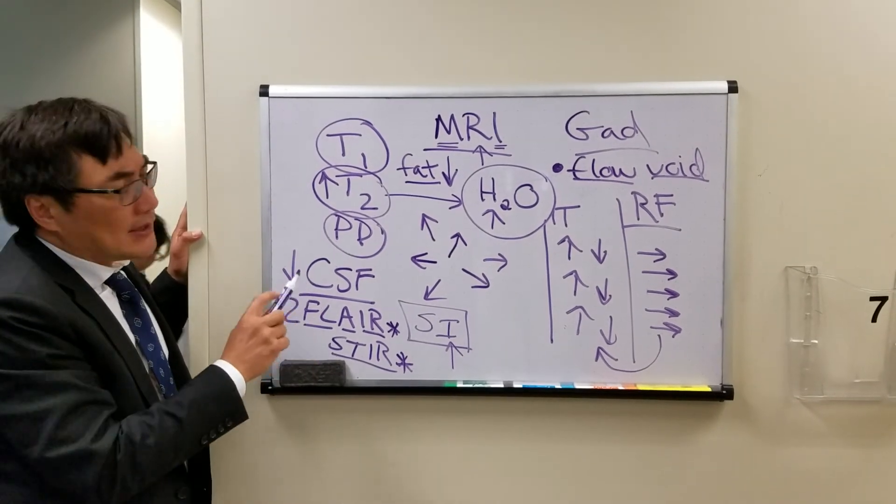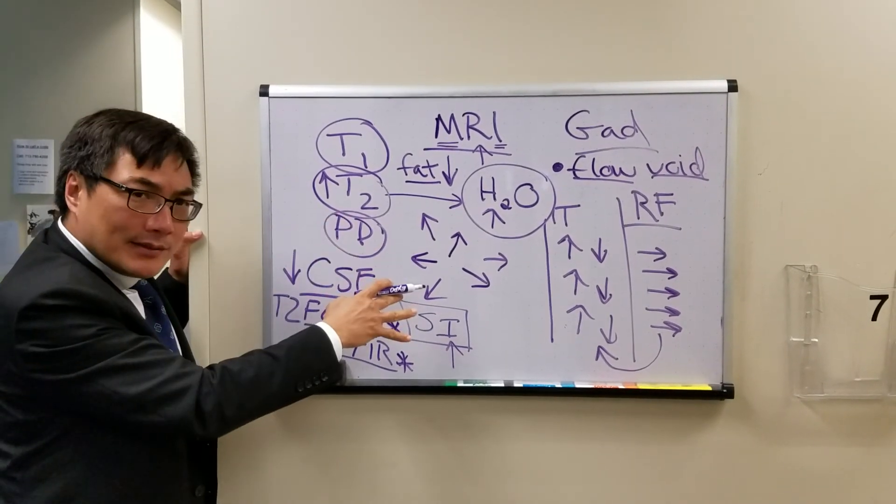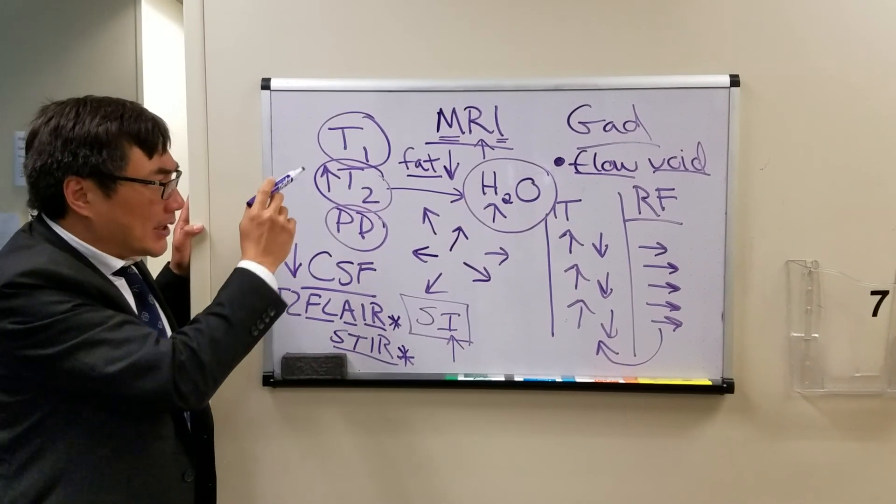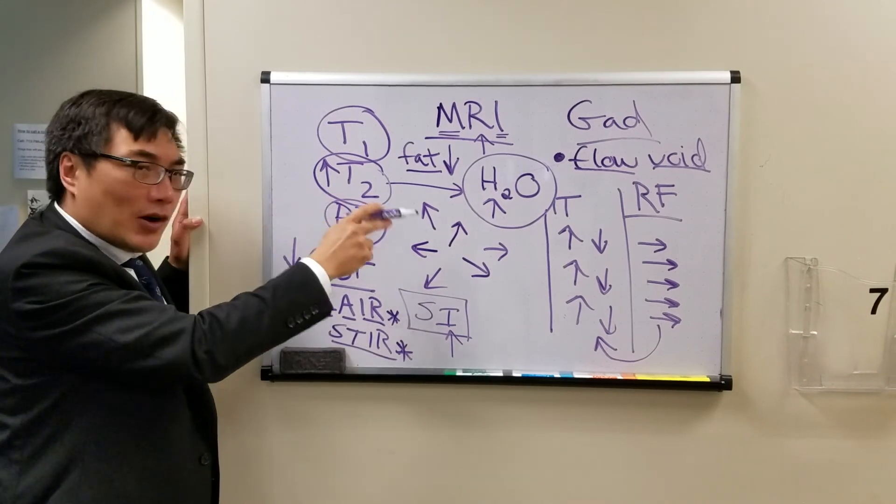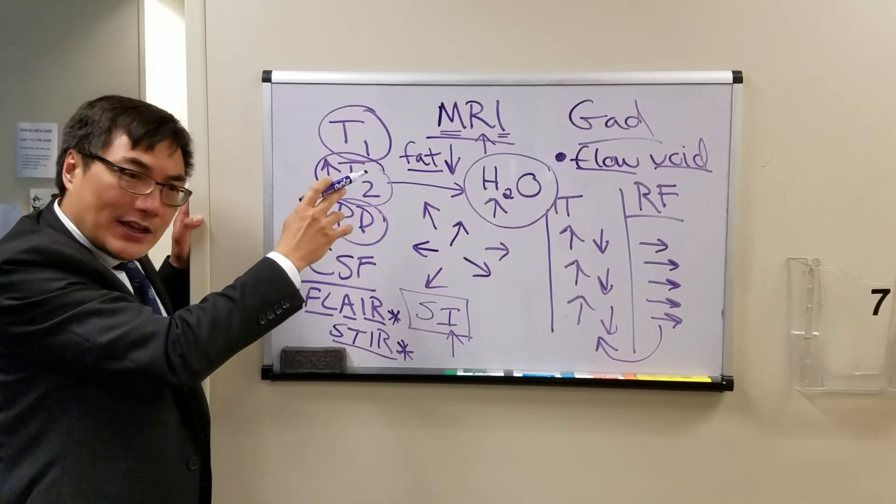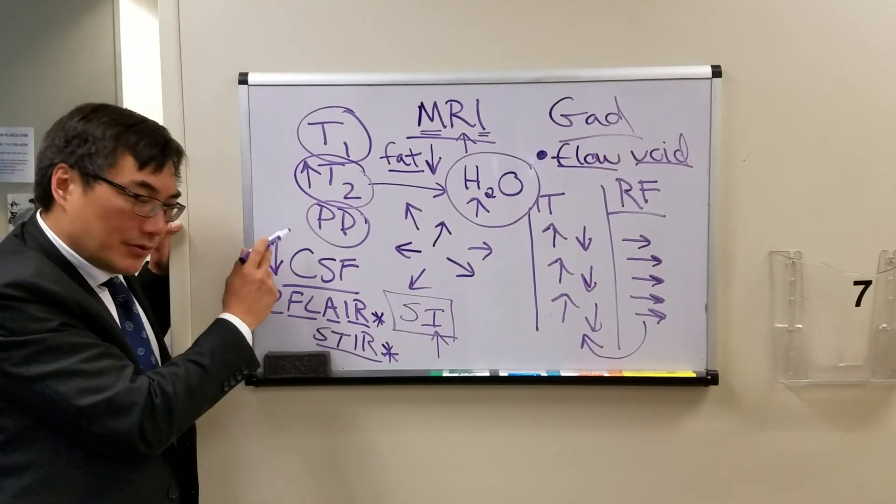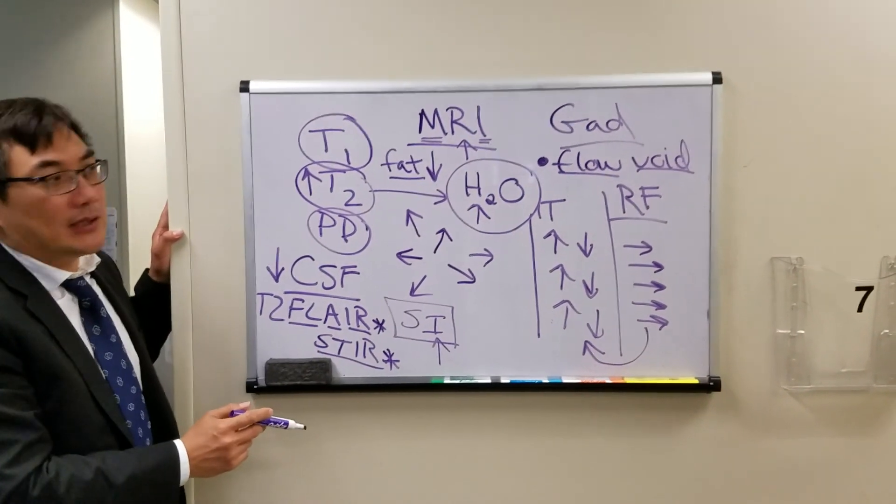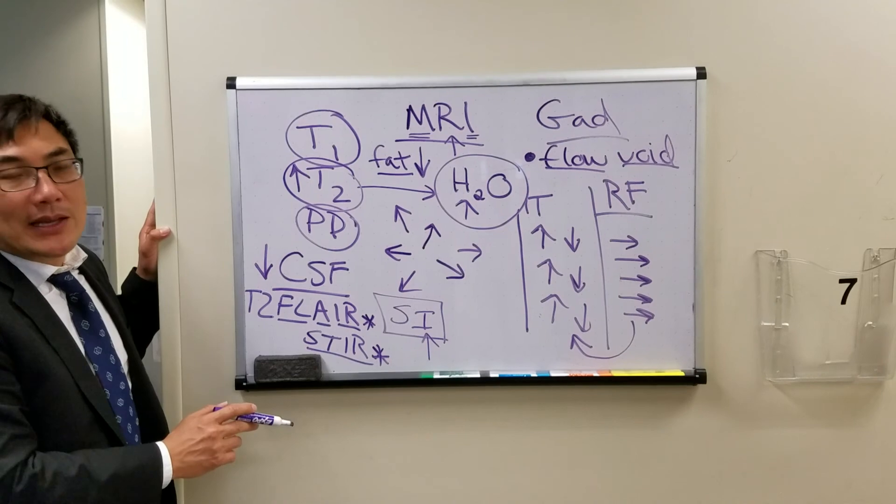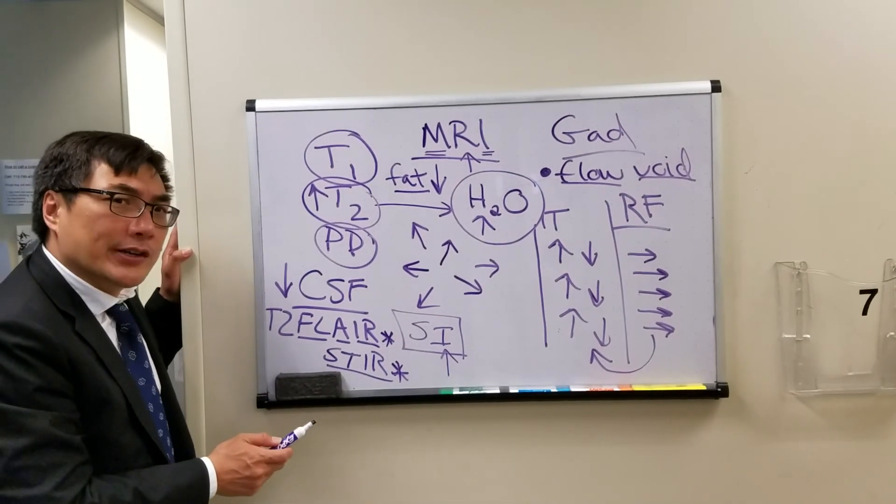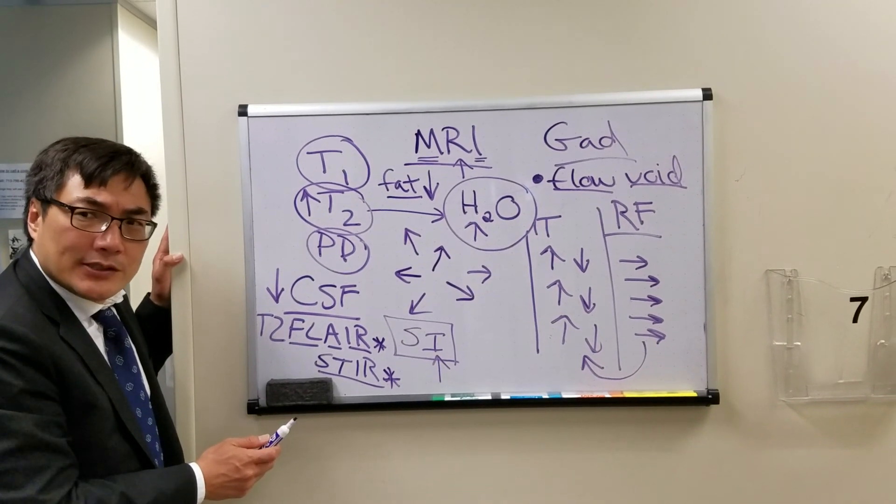So the basics of MR: proton, water, weight the study, T1, T2. Some things are bright on T2, like water. Some things are bright on T1, like fat. We can suppress the normal signal with FLAIR on CSF T2, and fat saturation on T1. Always give the gadolinium. And we can see fast-moving blood as a flow void in all sequences.